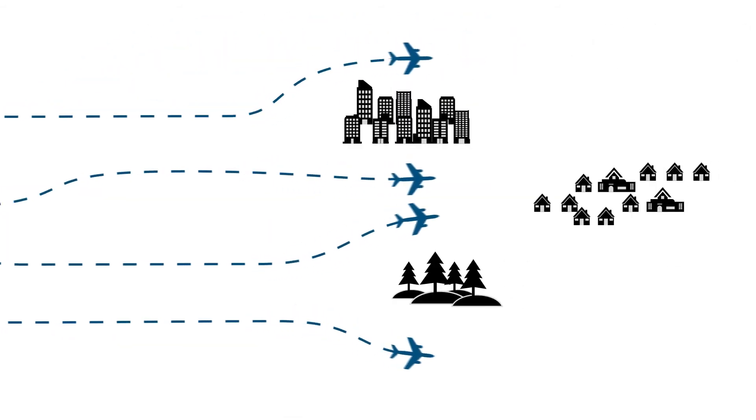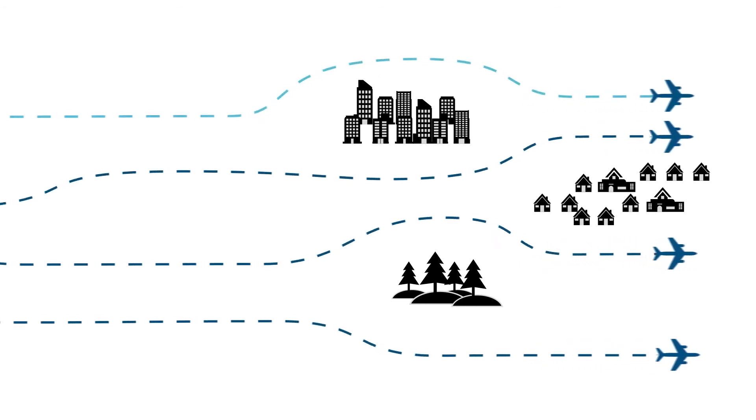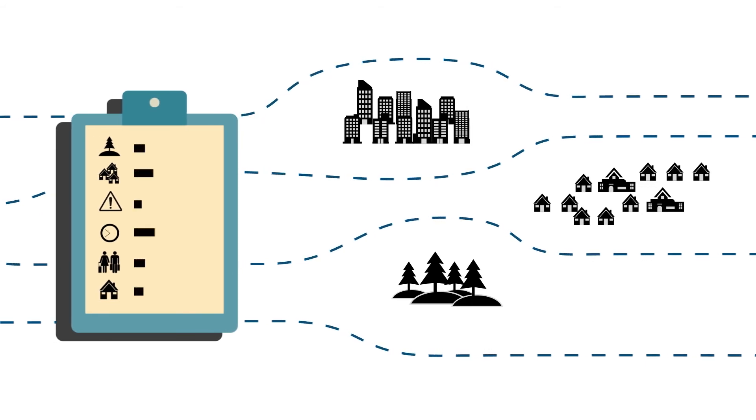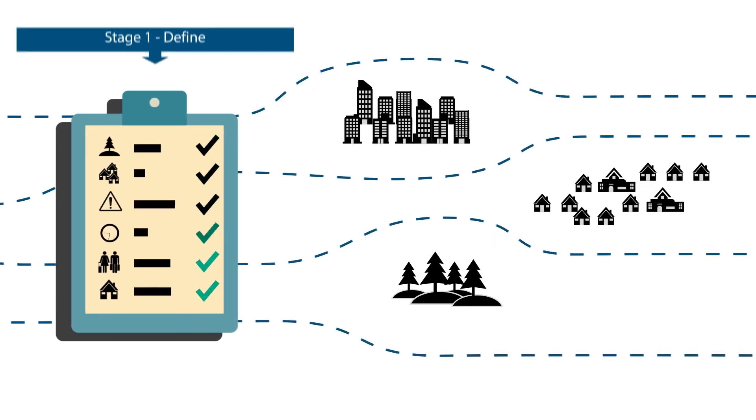The route designers will then develop a set of potential route options. Each potential route option will then be assessed against our Statement of Need and the 11 design principles established through stakeholder engagement in Stage 1.